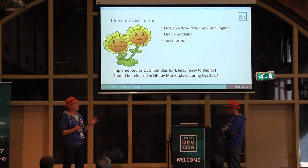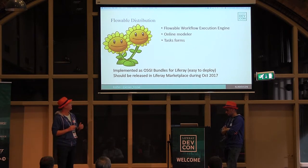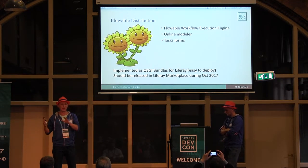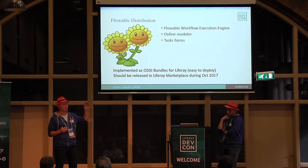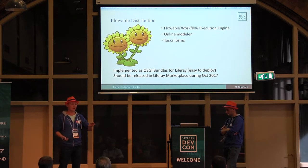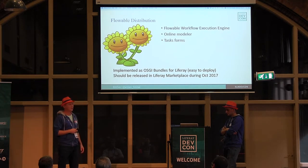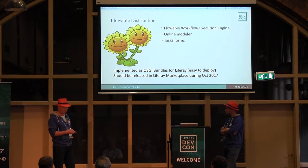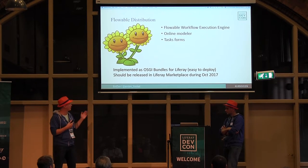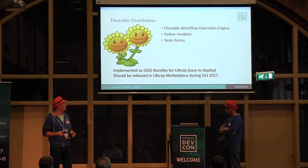Since we are reusing standard LifeRay UI functionality but that standard UI doesn't support task form features, we had to implement our own portlet to work with tasks. Our integration distribution contains several bundles. In general it consists of three parts: first, the Flowable workflow execution integration - we take the Kaleo workflow engine out of LifeRay and implement the same interface using Flowable. We can then deploy it instead of Kaleo and fully reuse BPMN processes for approval. Second, the online modeler to model and deploy processes. Third, task forms support for specific forms on user tasks. Everything is implemented as OSGi bundles, and we hope it will be available in the marketplace in October.